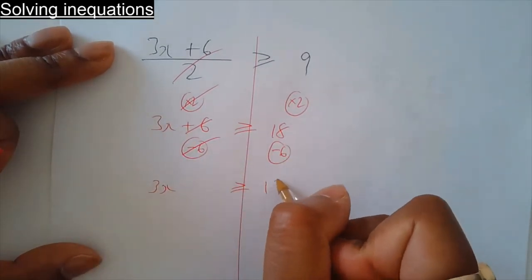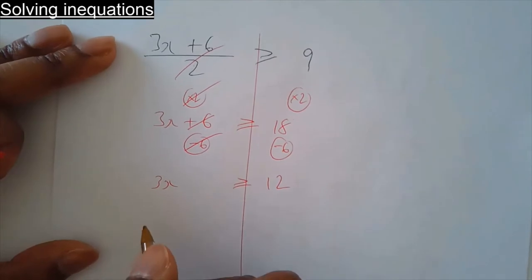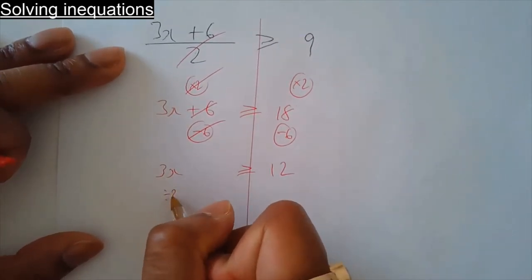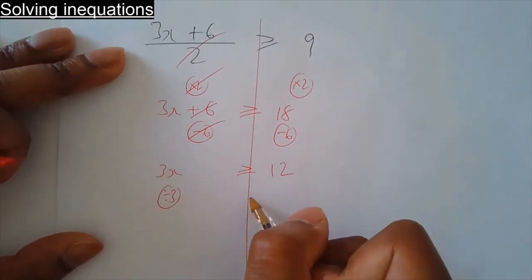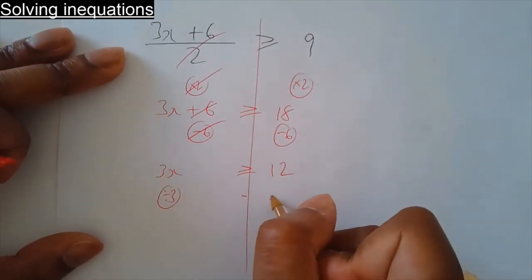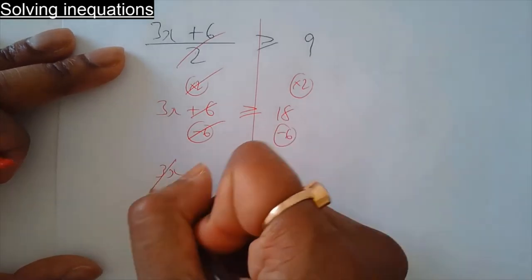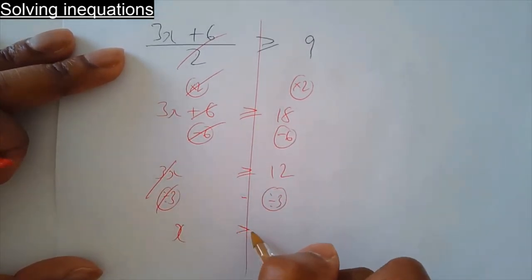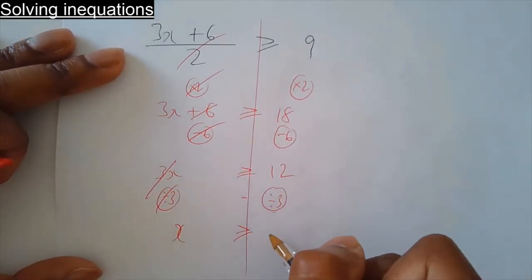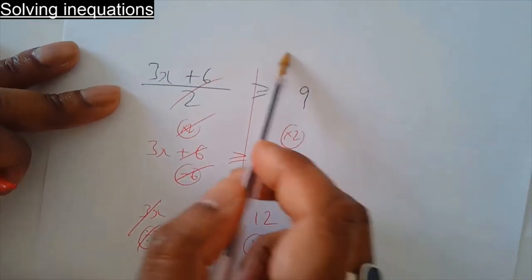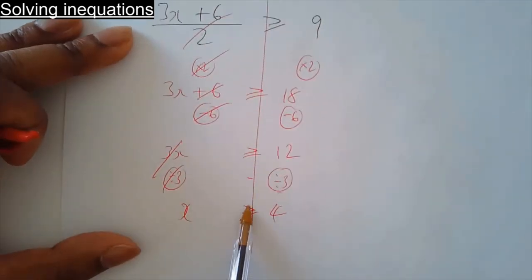18 take away 6 is 12. To get rid of times by 3, divide by 3 — do the same on the other side. 12 divided by 3 is 4, so for that to be true, x has to be bigger than or equal to 4.